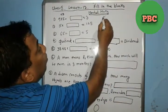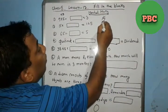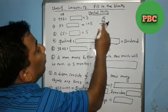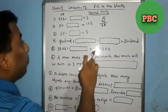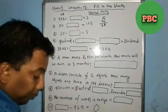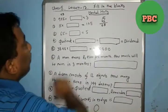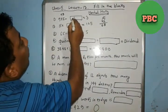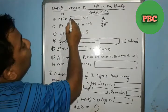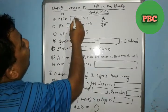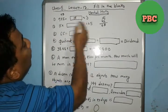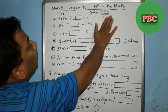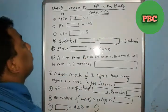15 × 3 is 45. 15 × 3 is 45. 15 × 3 is 45 — more.